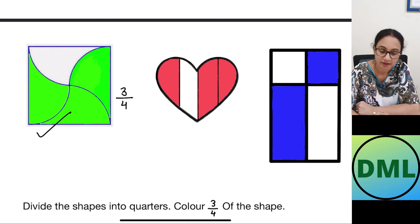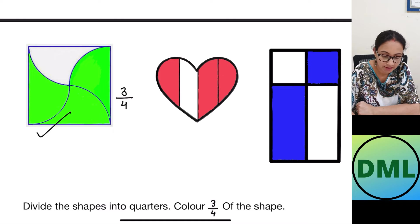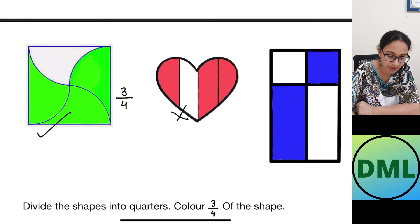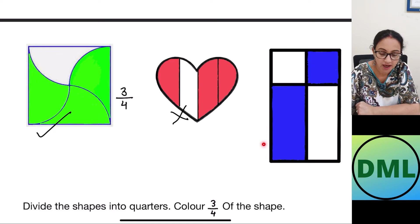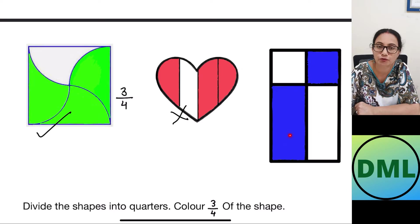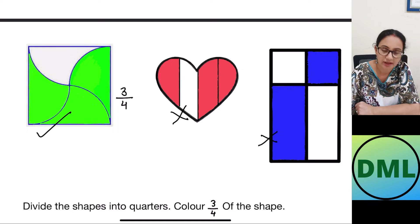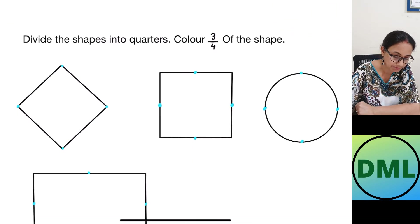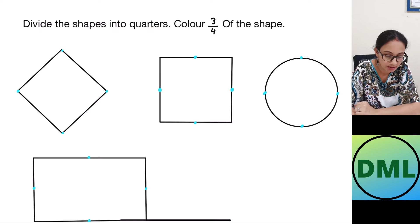Let's look at the next figure — this is the heart. I have divided it into one, two, three, and four parts. But are the parts equal? No — this part is smaller than this part. Not my answer. The next figure is a rectangle divided into one, two, three, and four parts, but the parts are not equal — this shape is smaller than this shape. These are four unequal parts, so this is not my answer.